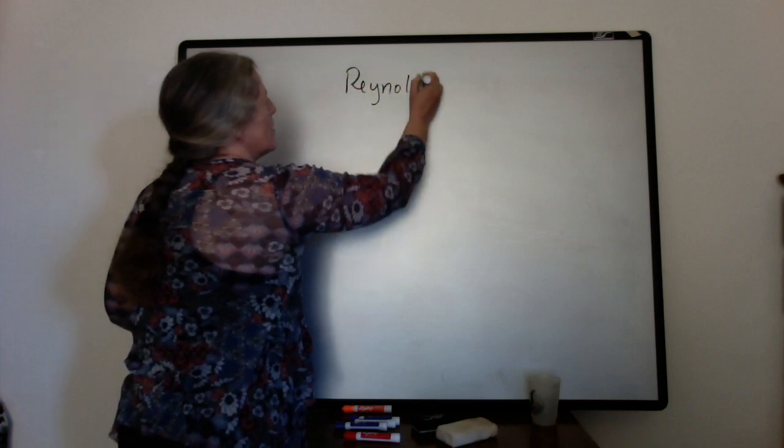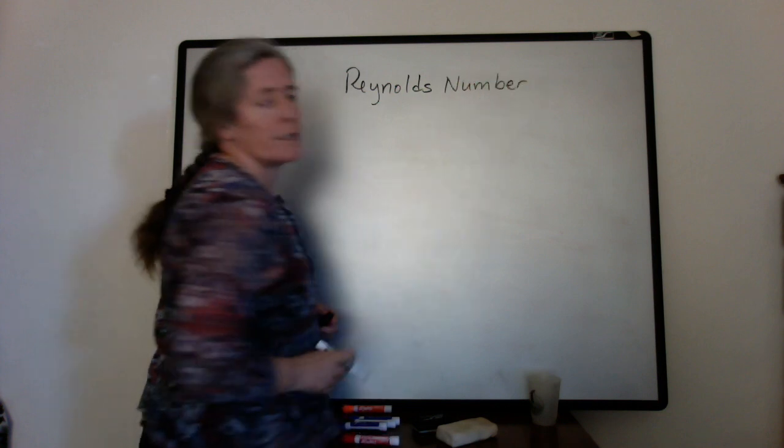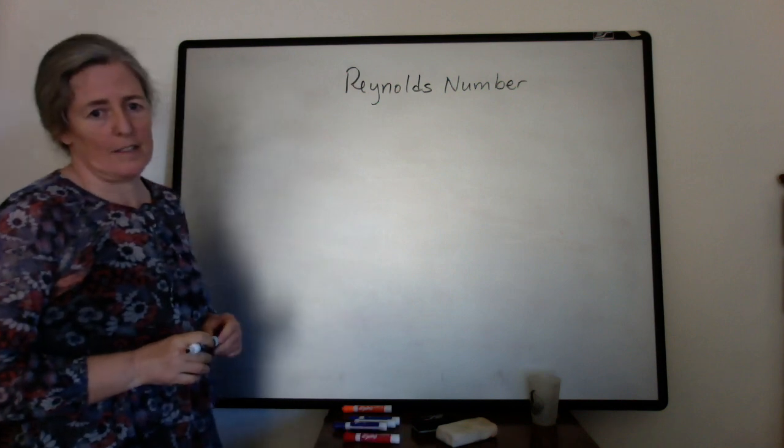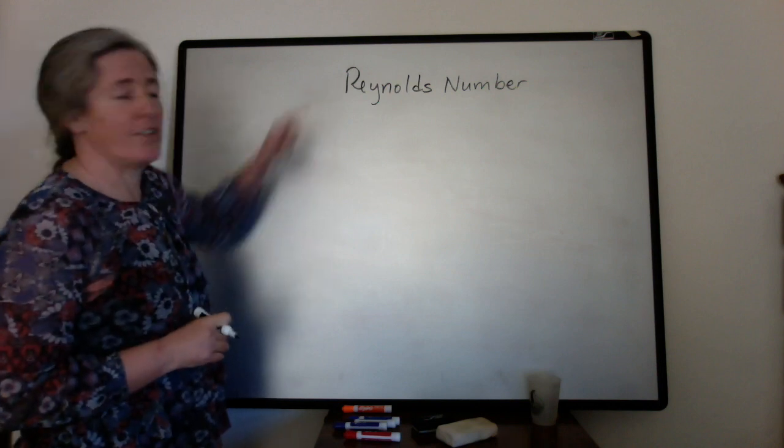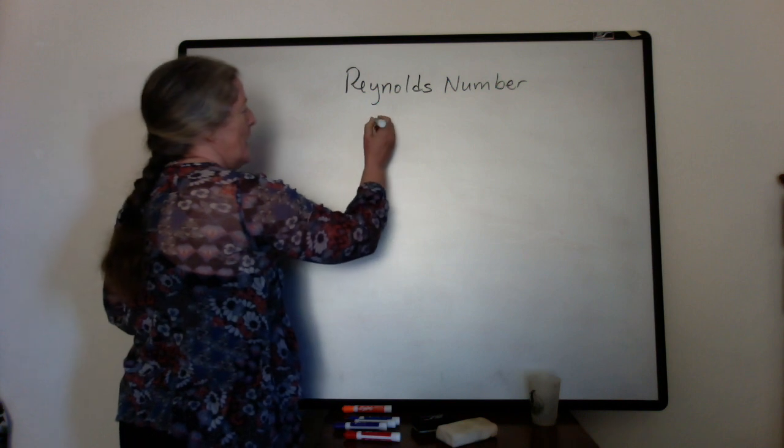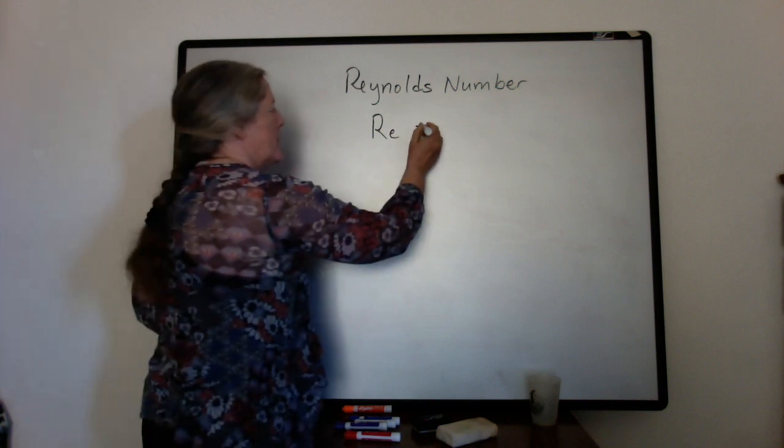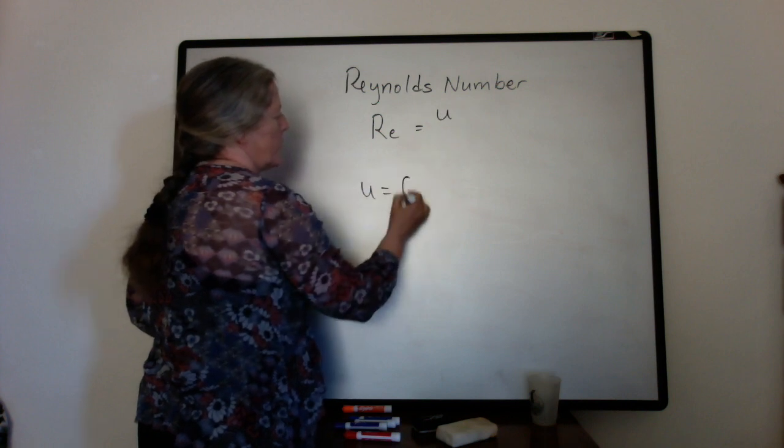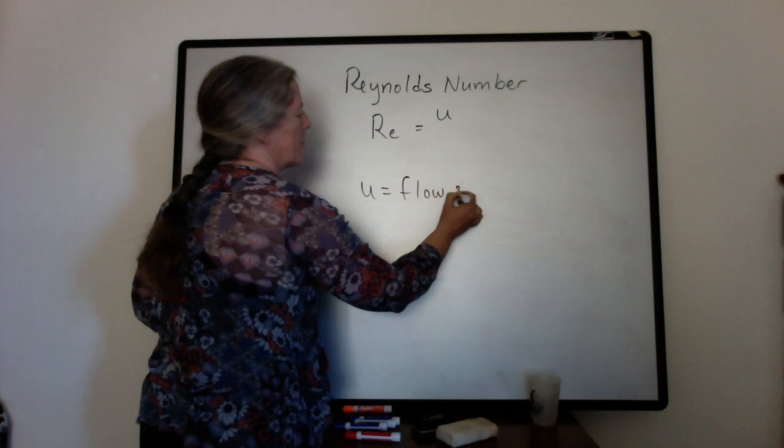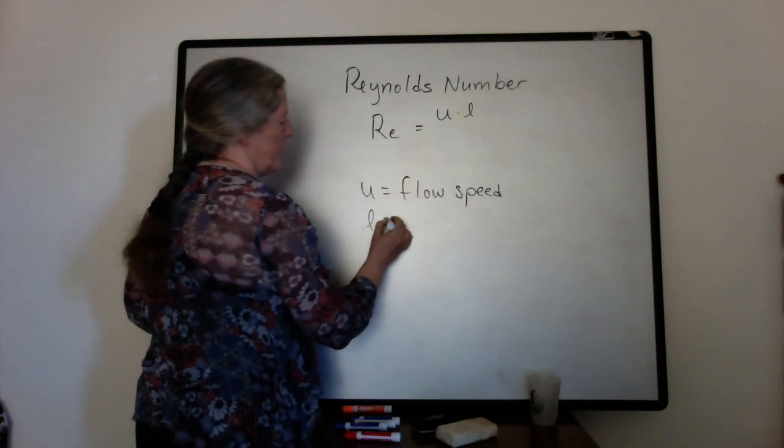So we have the Reynolds number, and I'm going to use a version of it that is for an open channel flow with a particular depth. There's a variety of different versions of it. But the Reynolds number is usually Re, and it depends on the flow speed. So U equals the flow speed, times L, which is the depth of the flow.